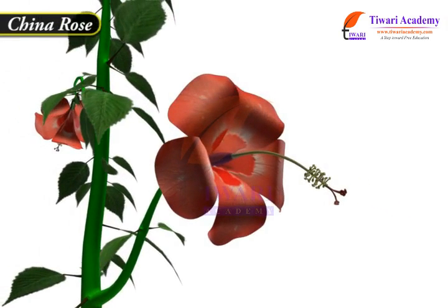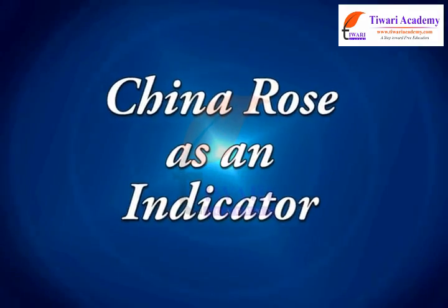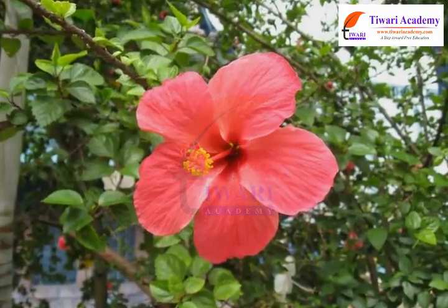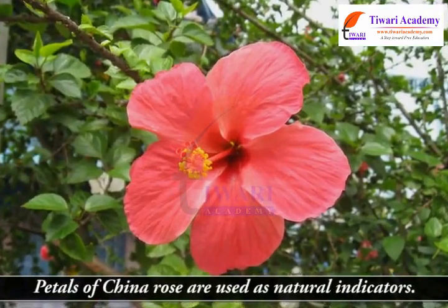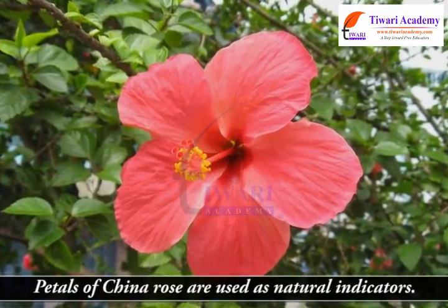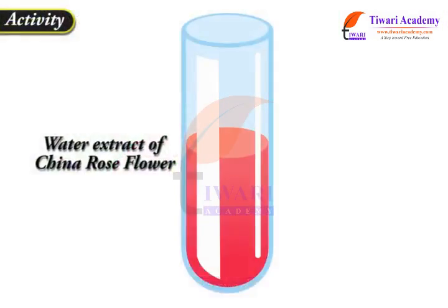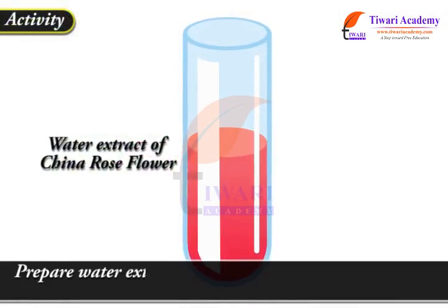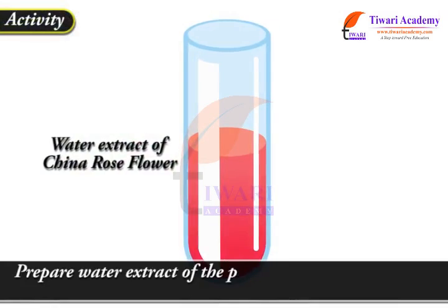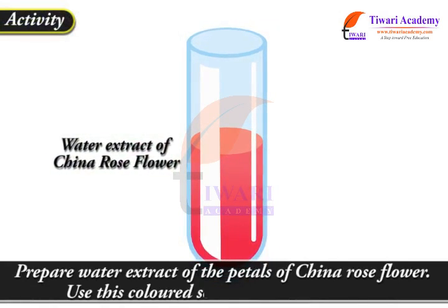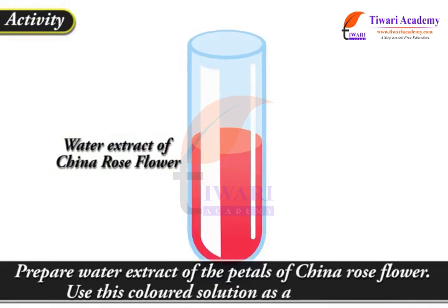China Rose is used as a natural indicator. Petals of China Rose are used as natural indicators. Prepare a water extract of the petals of the China Rose flower and use this colored solution as an indicator.